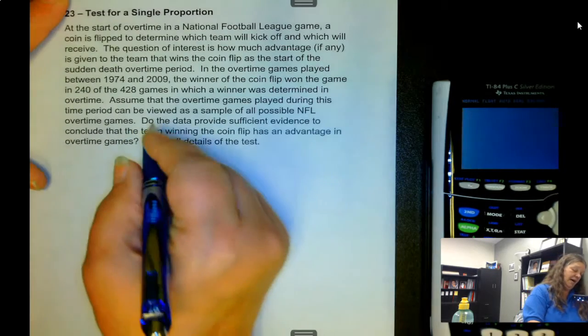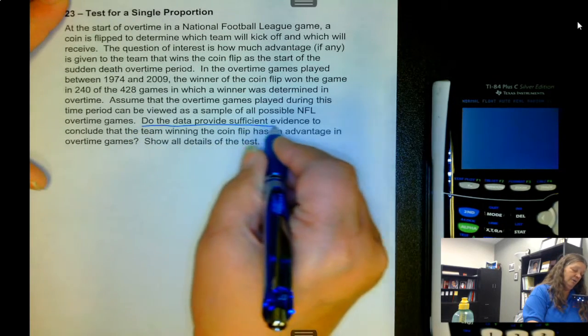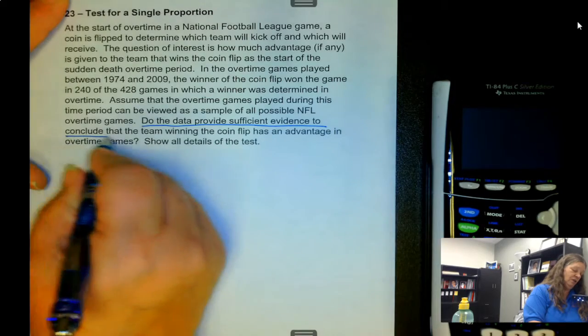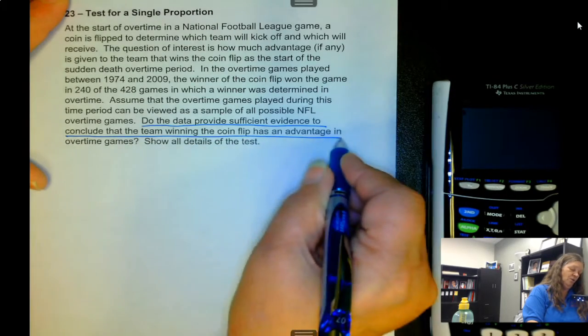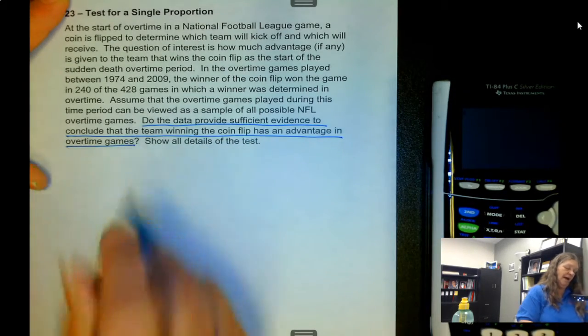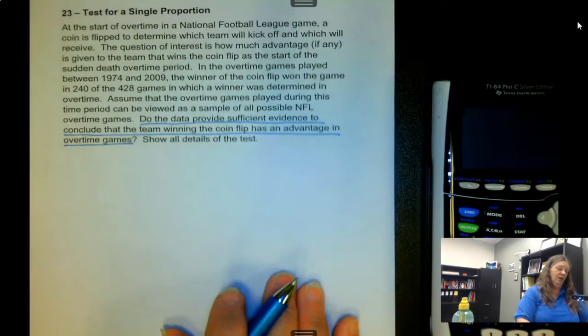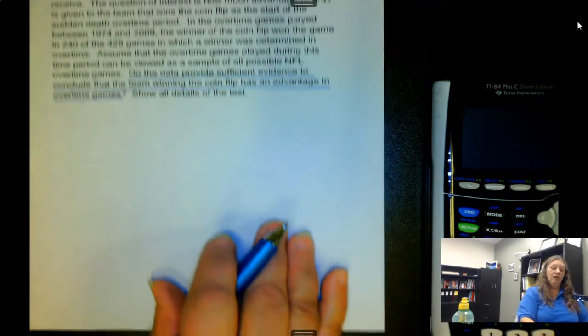Do the data provide sufficient evidence to conclude that the team winning the coin flip has an advantage in overtime games? Show all details.